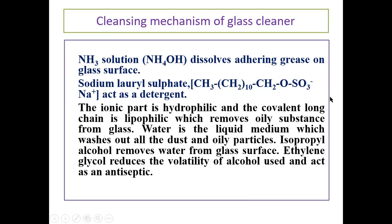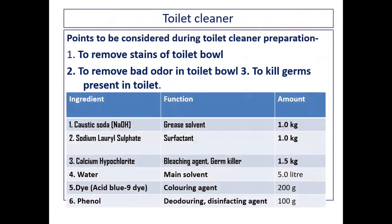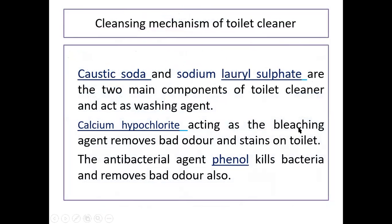This is the cleaning mechanism of a glass cleaner. This is our toilet cleaner. The points to be considered during toilet cleaner preparation: to remove the stain of toilet bowl, to remove the bad odor in the toilet bowl, and to kill germs present in toilet. Different components are present: caustic soda, sodium lauryl sulfate, calcium hypochlorite, water, dye, and phenol. Caustic soda and sodium lauryl sulfate are the two main components and act as washing agents. Calcium hypochlorite acts as the bleaching agent, removes bad odor and stains on the toilet. The antibacterial agent phenol kills bacteria and removes bad odor also.